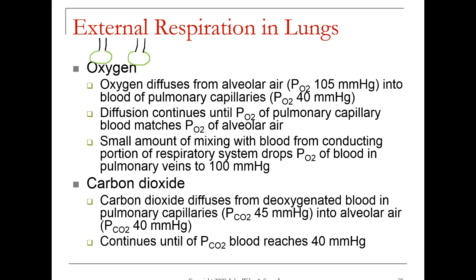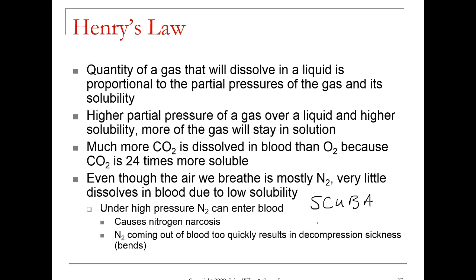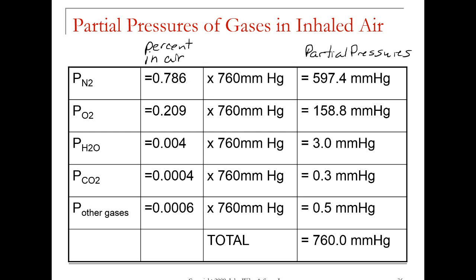Oxygen will diffuse from alveolar air with a partial pressure of oxygen of 105 millimeters of mercury into the blood of pulmonary capillaries with a partial pressure of 40 millimeters of mercury. Does anybody remember what the partial pressure of oxygen in air was? Let's flip back a couple of slides — the partial pressure of oxygen in fresh air was 158 millimeters of mercury.